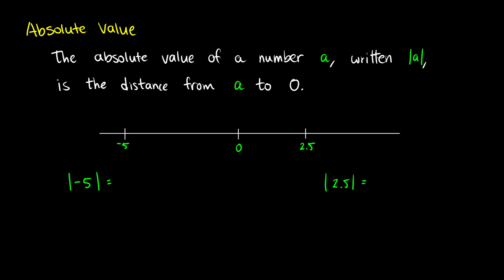The absolute value of a number a — written with two bars beside it — means we're looking for the distance from a to zero on the number line. So this is about how far away it is. For instance, if we take the absolute value of negative five, we're asking how many units away is it from zero. This is five units away from zero, so the absolute value of negative five is just five.